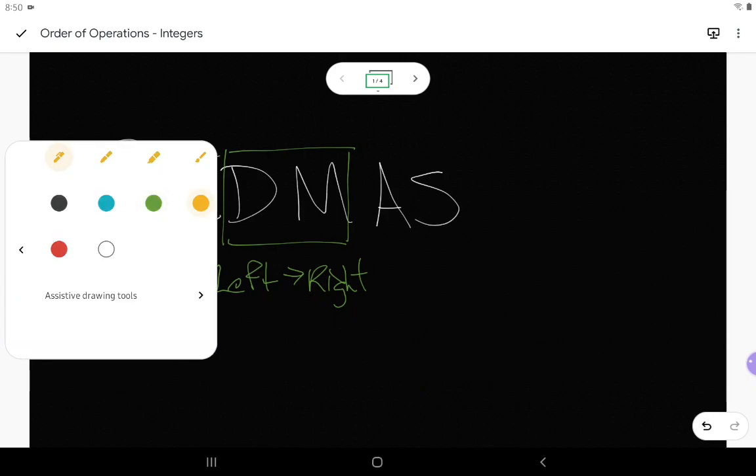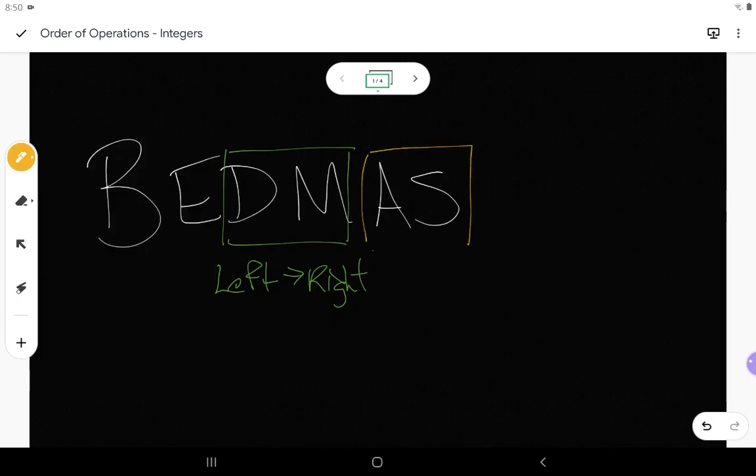For addition and subtraction, it's the same thing. We do move from left to right. But what we should be doing with integers is we're probably changing every subtraction into adding the opposite integer anyway. And if we change our subtraction to adding the opposite integer, then all we're doing is adding. And if all we're doing is adding, then it makes it much simpler to see that we can just go left to right.